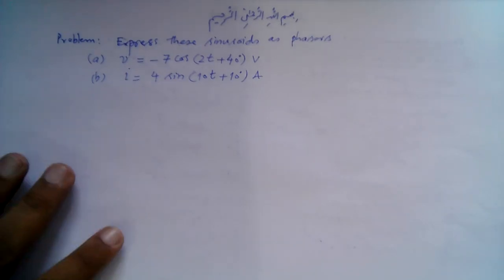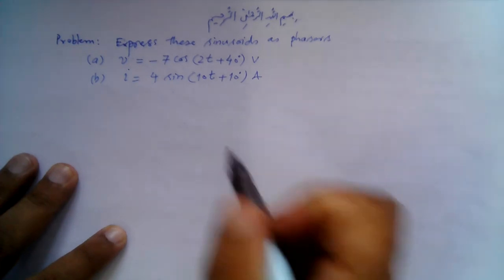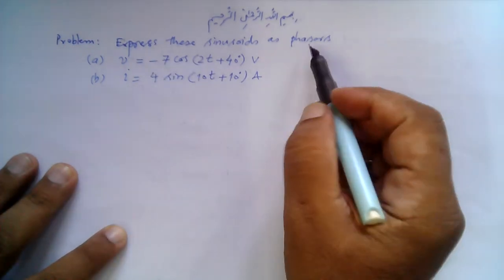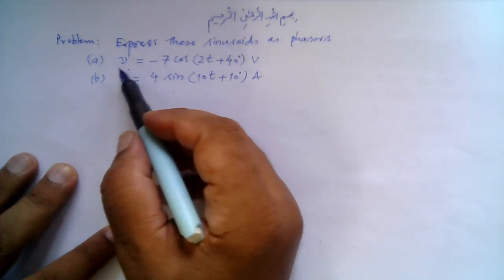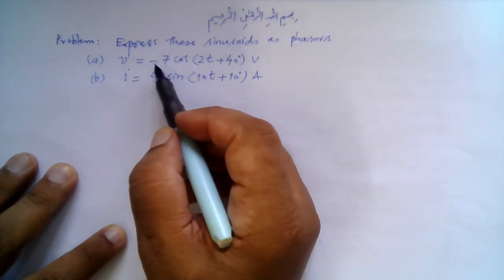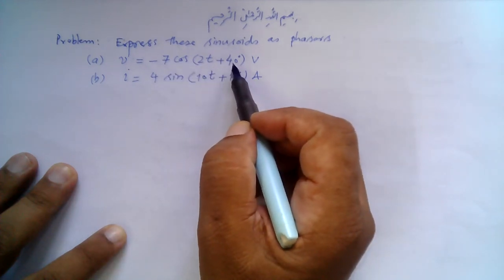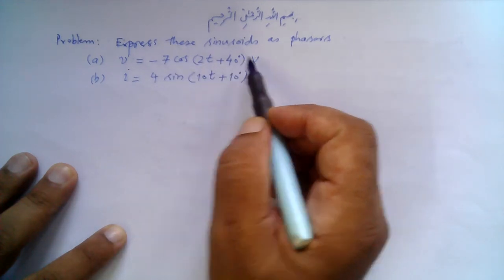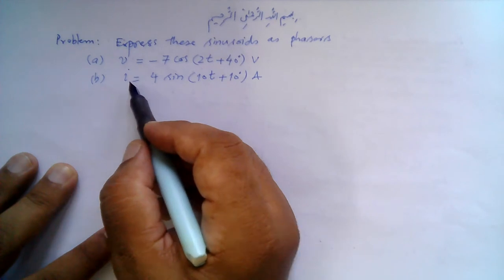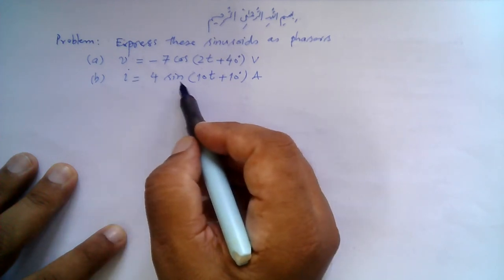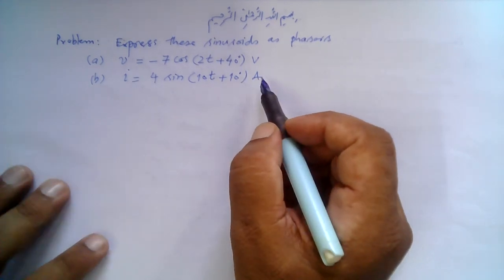Bismillahirrahmanirrahim. We have this problem: express these sinusoids as phasors. Part A: v is equal to minus 7 cos(2t − 40°) volts. Part B: i is equal to 4 sin(10t + 10°) amperes.